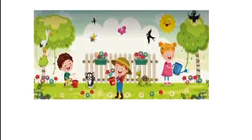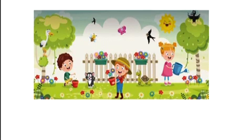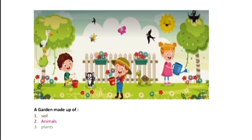We can see in a garden a butterfly, a bird, a cat, a tree, and flowers. So, a garden is made up of soil — a turba — animals — haywanat — and plants — nabatat.